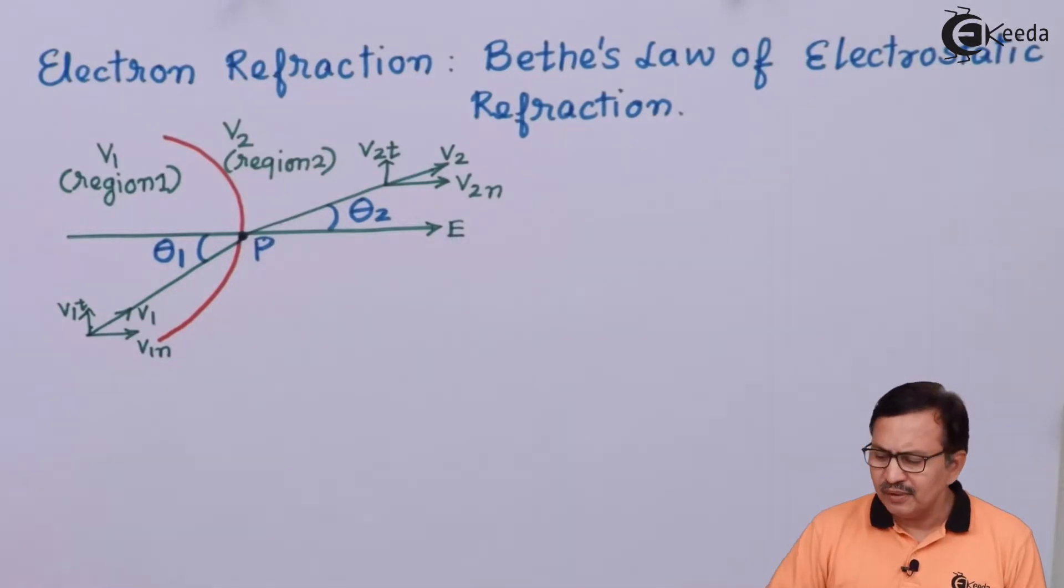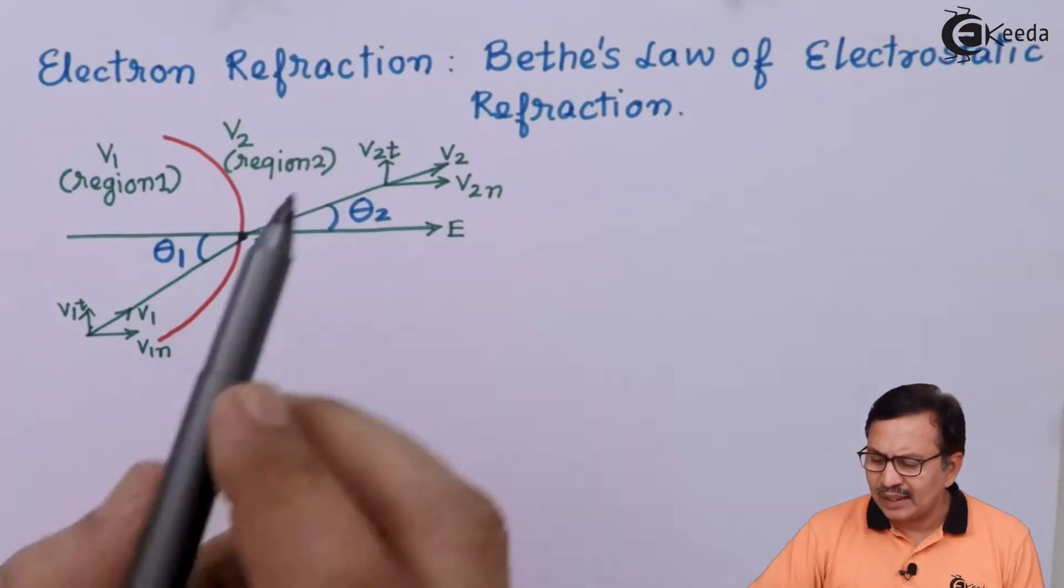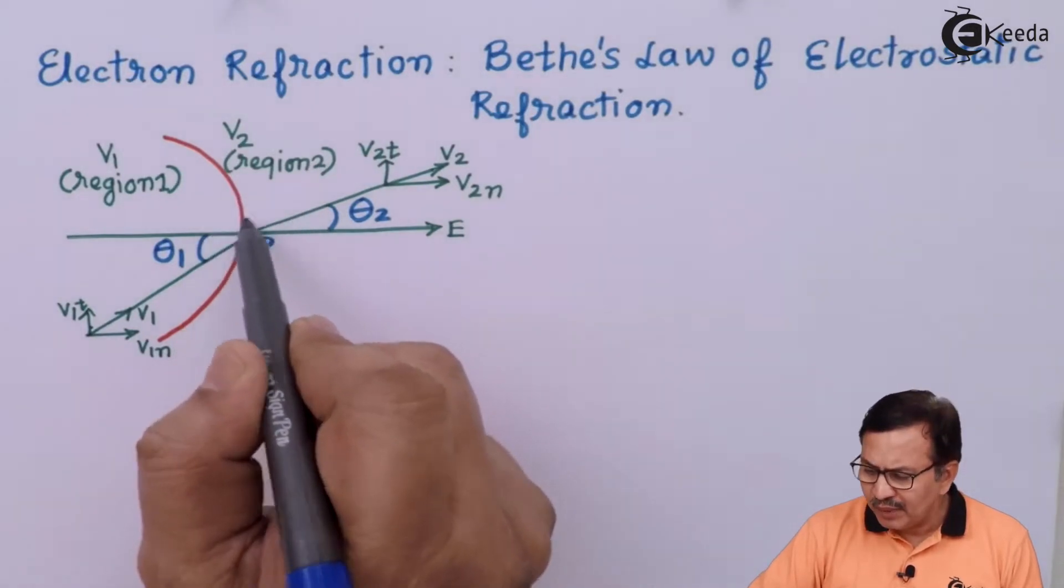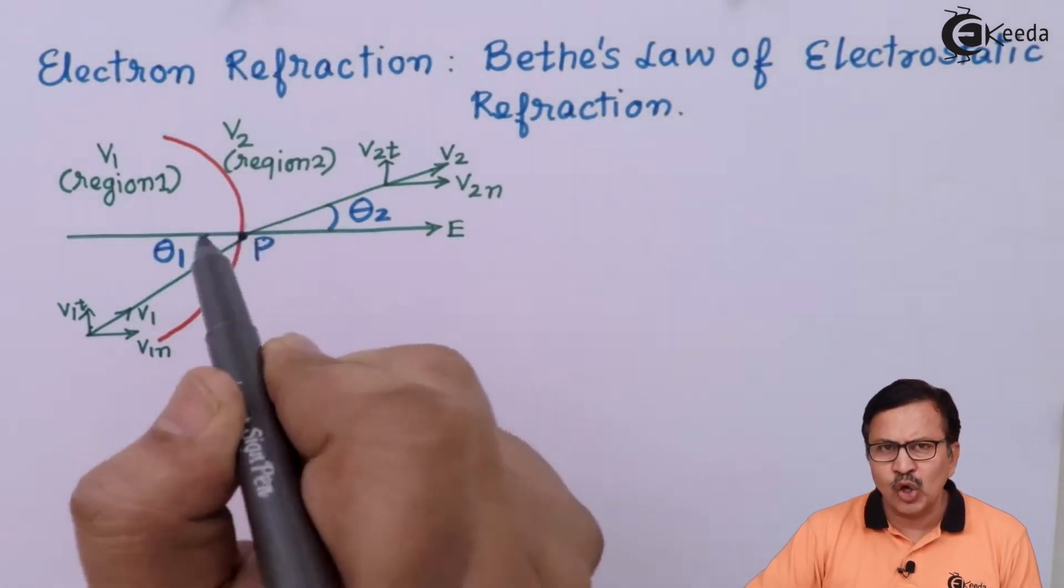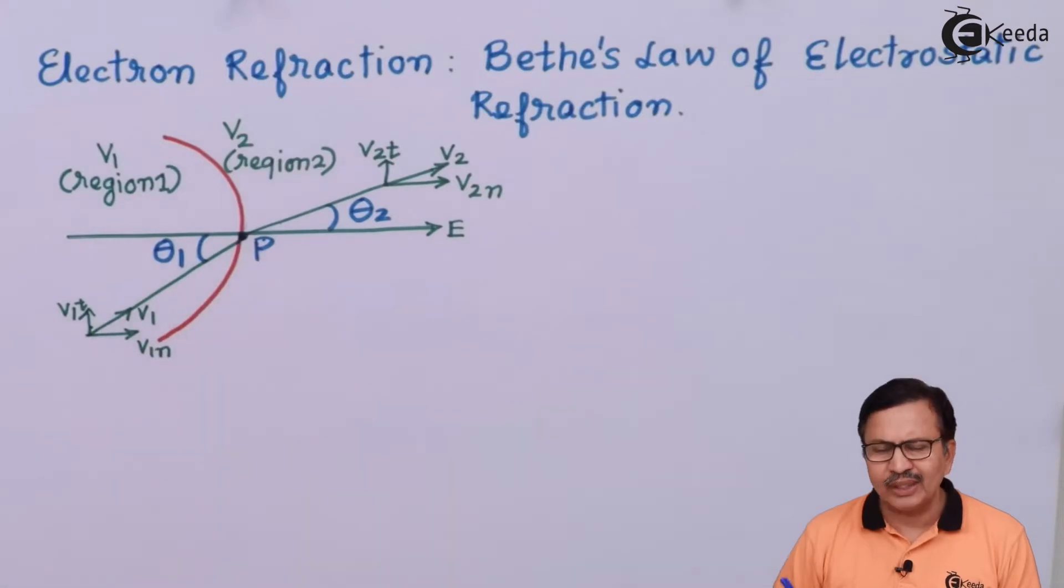By definition, the electric field is always acting in a direction perpendicular, or in a direction normal to the equipotential surface.